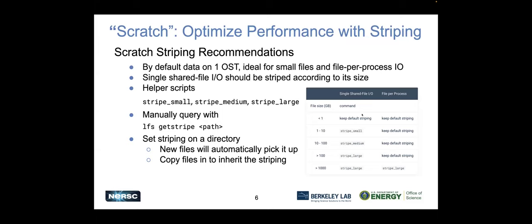We have several helper scripts where you can set up the default striping for your file depending on the size of it. There's a little table on our site — if you're dealing with a small one to ten gigabytes file, you don't need to stripe as widely, but as it gets larger you need to involve more servers. You can manually query the striping using `lfs getstripe` and then the path to the file. You can also set this as a default for a directory, so new files you put in there will inherit that striping. If you're doing single shared file IO or working with really big files, you need to think about file striping and check out our docs. But if you're working with smaller files — less than a gigabyte or so — and doing file-per-process, you should be fine with the defaults.